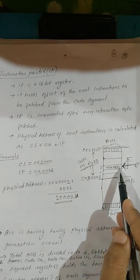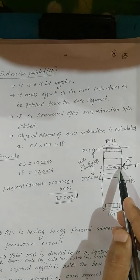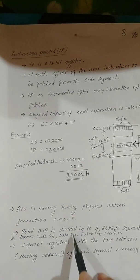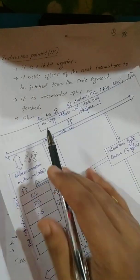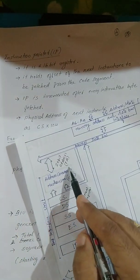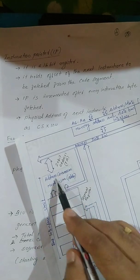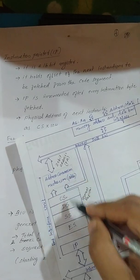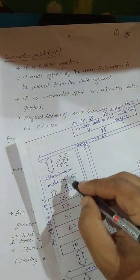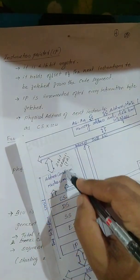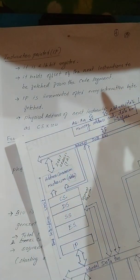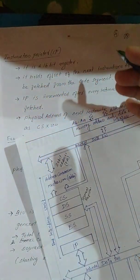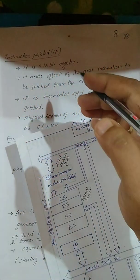In this example the instruction is MOV AX, BX. This calculation — Code Segment register value × 10H plus Instruction Pointer value — is done by the adder circuit to point to the next instruction to be fetched from memory. This part of the BIU actually interfaces with the memory side.